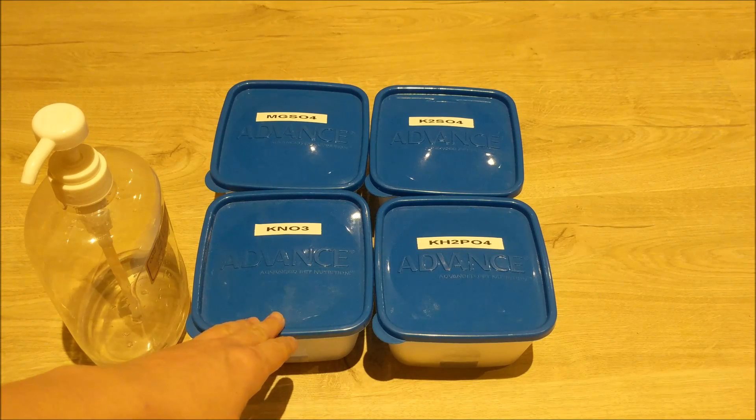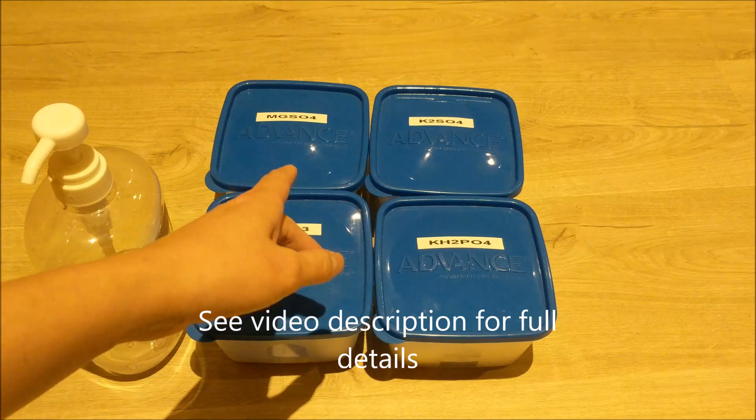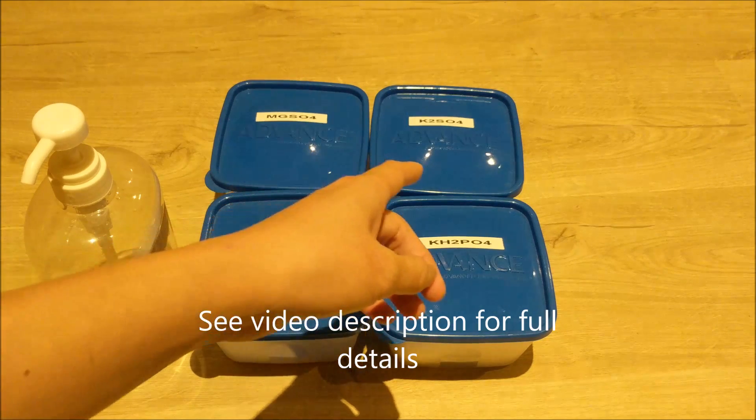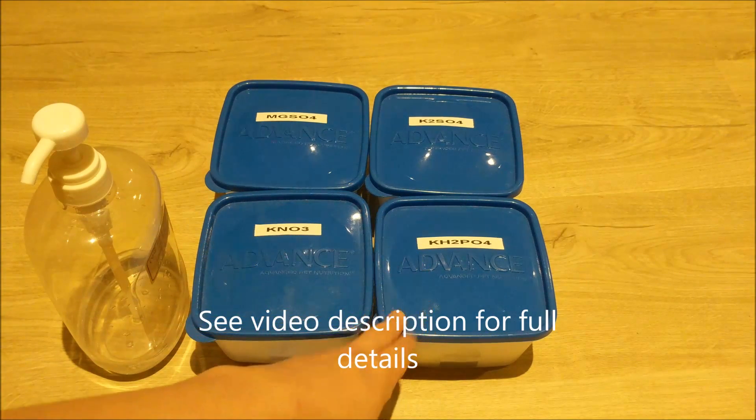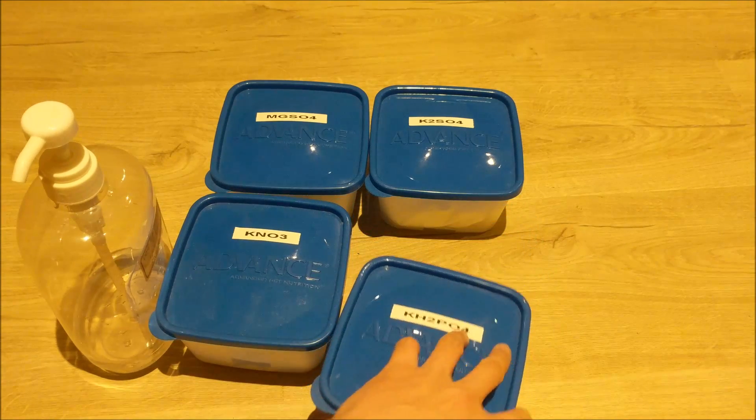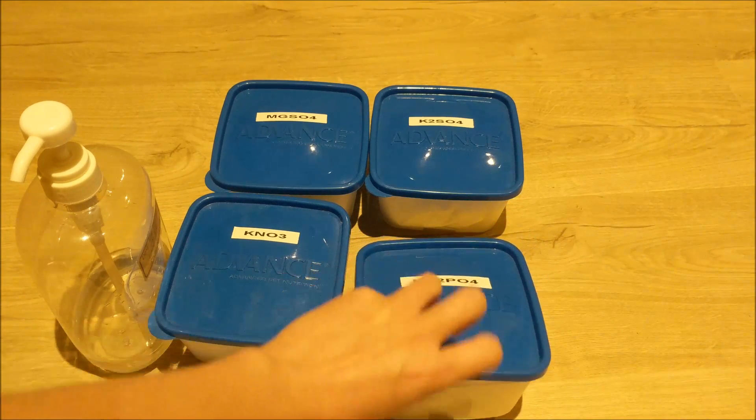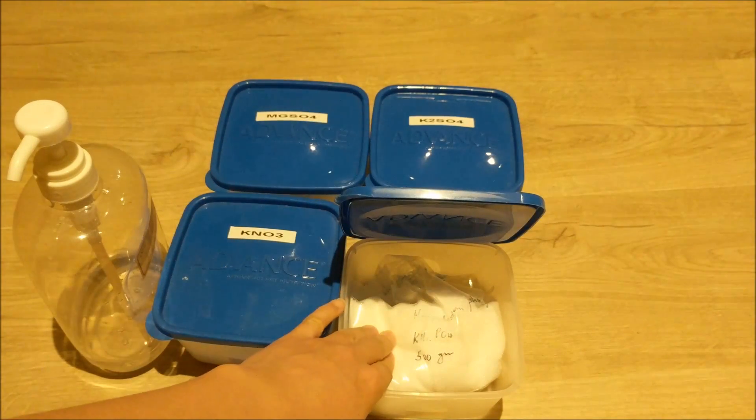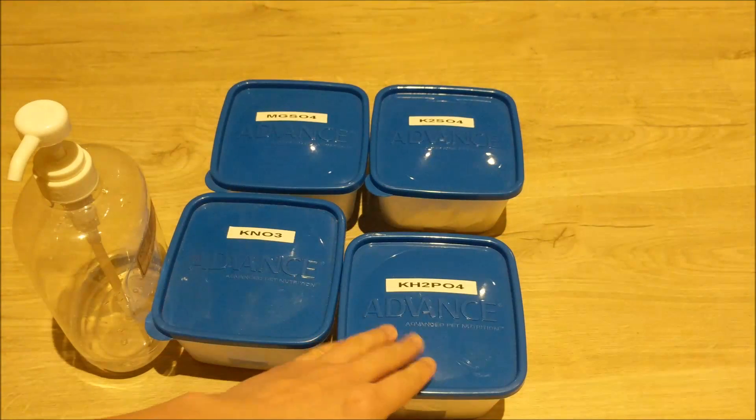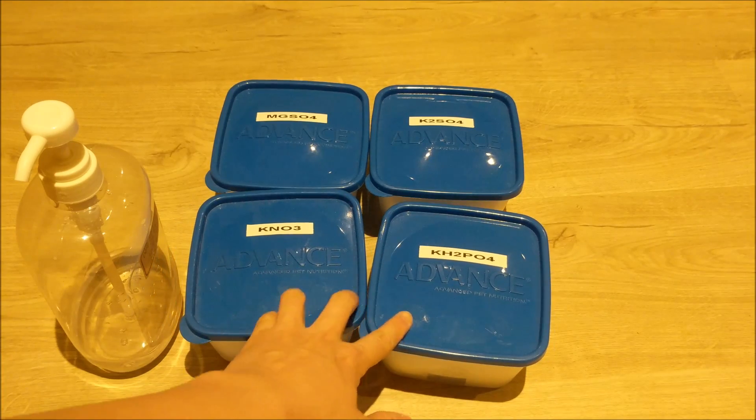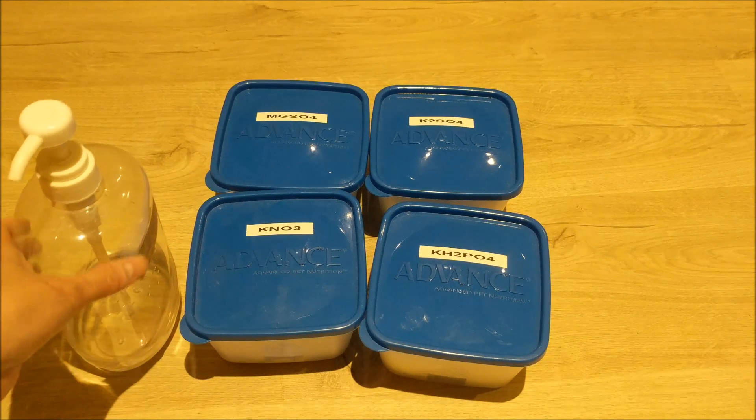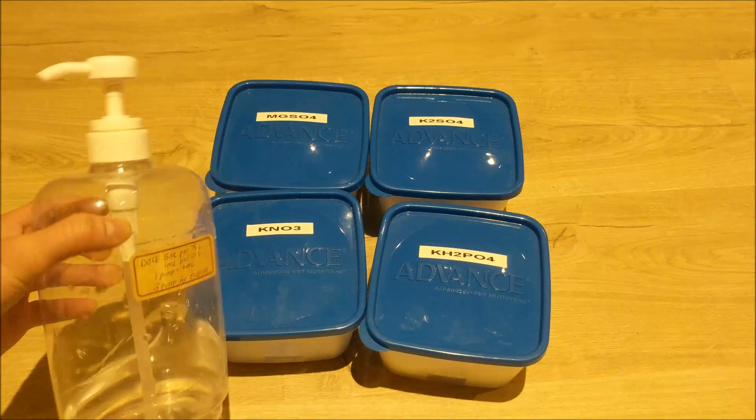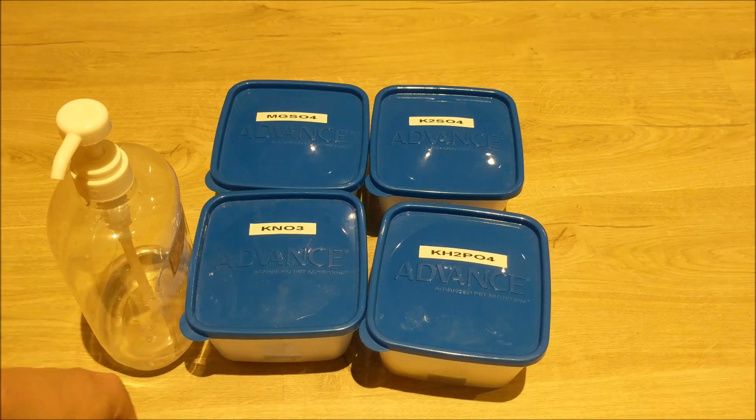For your dry fertilizer, you need some potassium nitrate, magnesium sulfate, potassium sulfate, and KH2 phosphate. It's all in powdered form. I'm just going to pause the video and show you exactly how to mix this all up.